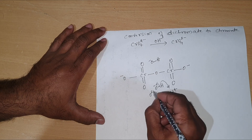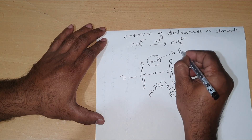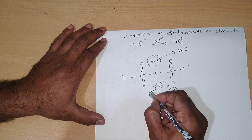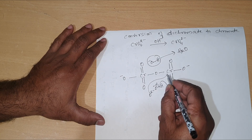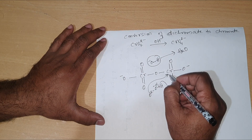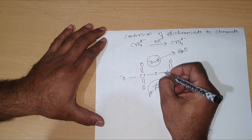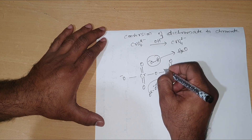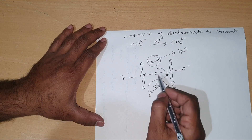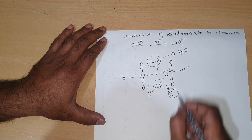This forms O²⁻. The H⁺ and the OH⁻ go out as water, H₂O. The O²⁻ is left behind and approaches the electron-deficient chromium center. Since the dichromate is in basic medium, chromium is forced to kick out the oxygen bridge along with the bond.